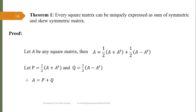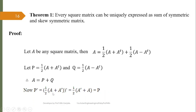We know that a matrix is symmetric if it equals its transpose, and a matrix is skew-symmetric if it equals the negative of its transpose. Consider P^T: that is the transpose of (1/2)(A + A^T). Taking the transpose inside gives (1/2)(A^T + A). We see this is nothing but P, so P^T = P.